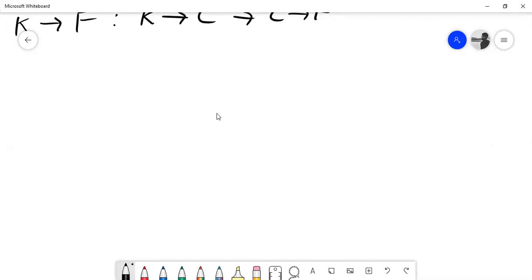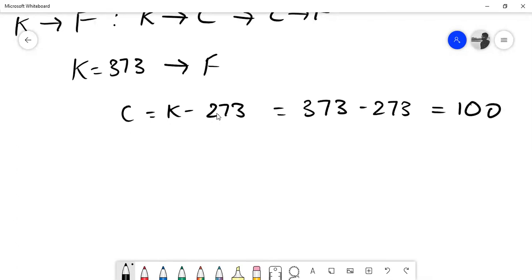Okay, now for example, they ask us to convert K equal to 373 into Fahrenheit. So as we already know, Celsius is equal to K minus 273. So you want to eventually convert to Fahrenheit, so the formula is Fahrenheit is equal to 9 upon 5 C plus 32.